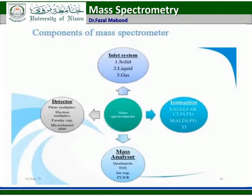The common components of the mass spectrum include the inlet system, which has three types: for solid, liquid, and gaseous samples. There are different types of ionization sources including ESI, EI, FAB, CI, FI, FD, MALDI, PD, and TI. Different types of mass analyzers are also available. Detectors include the Faraday cup, photomultiplier tube, electron multiplier tube, and micro channel plate.